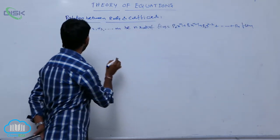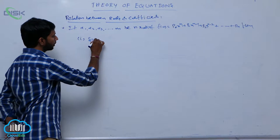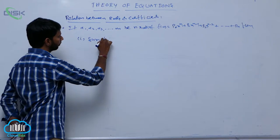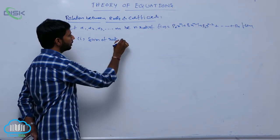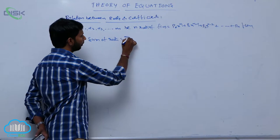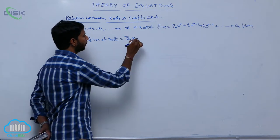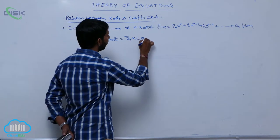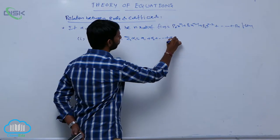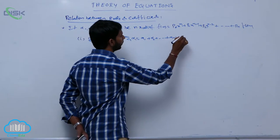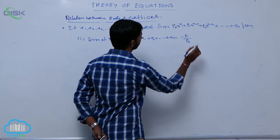Then, the first result: sum of roots, that is sigma alpha 1, that is equal to alpha 1 plus alpha 2 plus and so on, alpha n, is equal to minus p1 by p0.